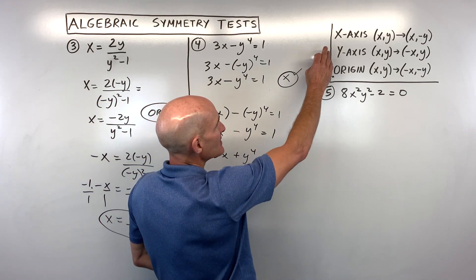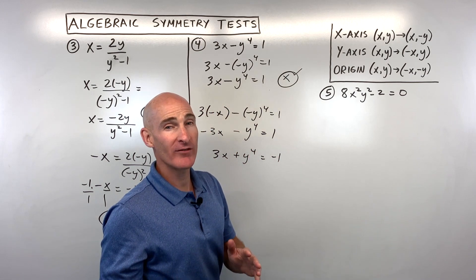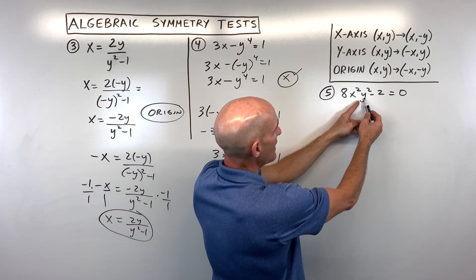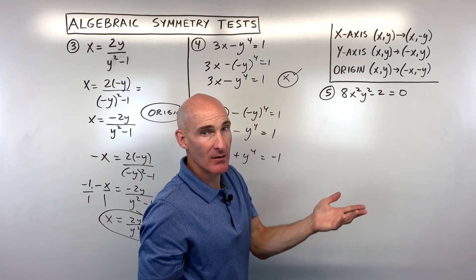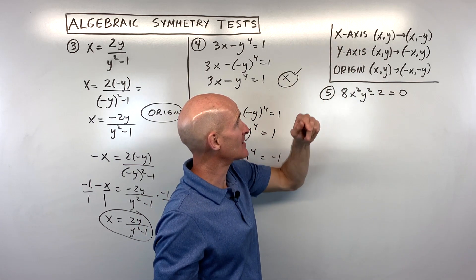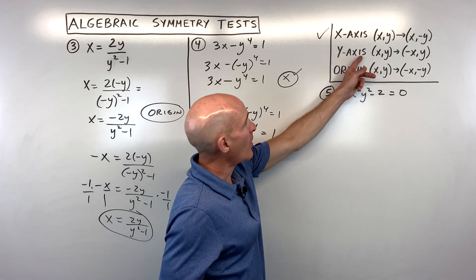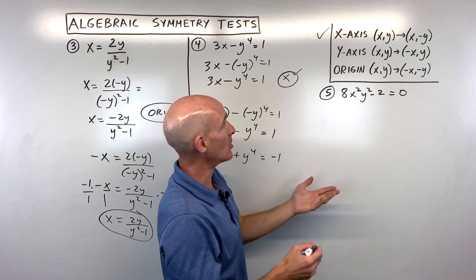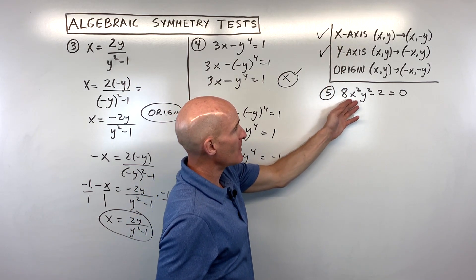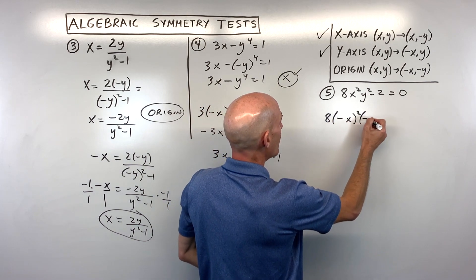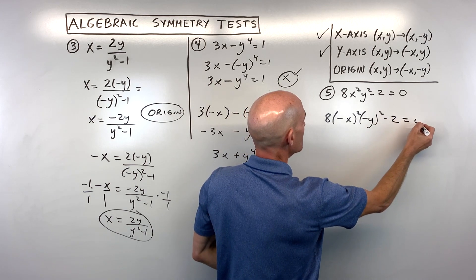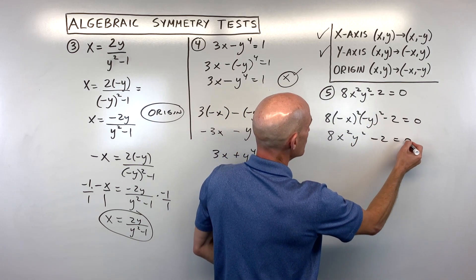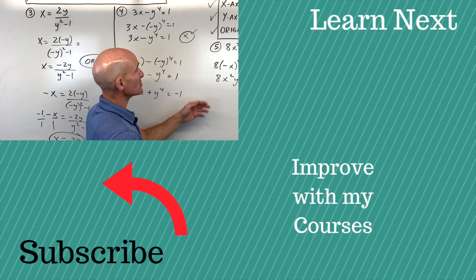What did you get for number five — x-axis, y-axis, origin, two of them, all three, or none? For x-axis, we replace y with negative y — negative y squared is positive y squared, so we get the original back. This does have x-axis symmetry. For y-axis, replacing x with negative x gives negative x squared, which is positive x squared — we get the original back, so it has y-axis symmetry. For origin, replacing both x with negative x and y with negative y, negative squared is positive for both — we get the original equation back, so it has origin symmetry. In this case, it had all three.